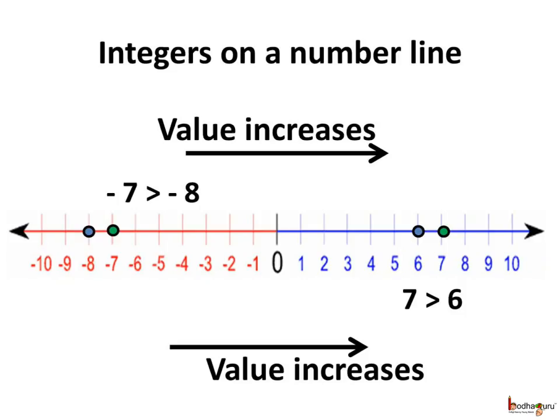We can compare integers very easily. Here we have the integers on a number line. The value increases as we go from left to right. Like minus 7, lying on the right side of minus 8, is greater than minus 8. Similarly, 7 is greater than 6 as 7 lies on the right hand side of 6, and so on.